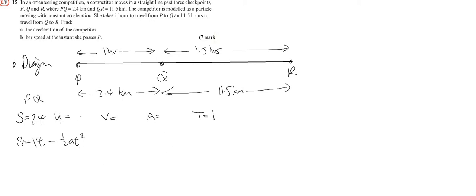We'll use s equals vt minus a half a squared. We're going to end up with two unknowns, so we'll have to set up some sort of simultaneous equation. 2.4 is going to be equal to the velocity at Q minus one half a times t. Since t is just one, that's just going to be a half a. Let's rearrange this so Vq is equal to 2.4 plus a half a.